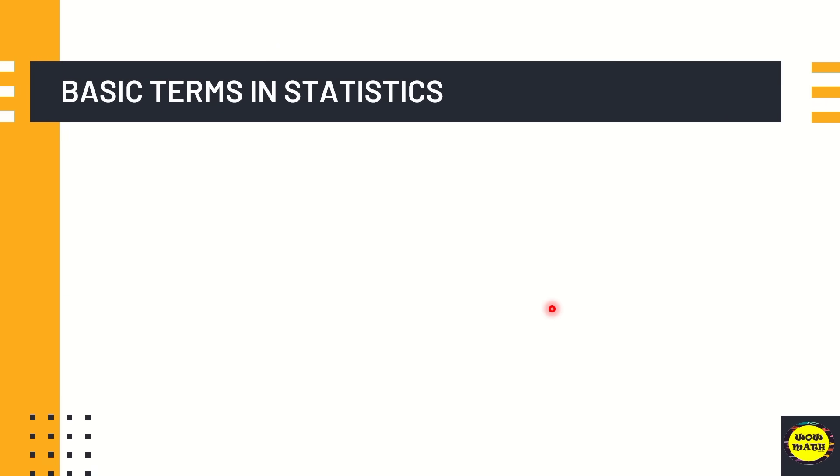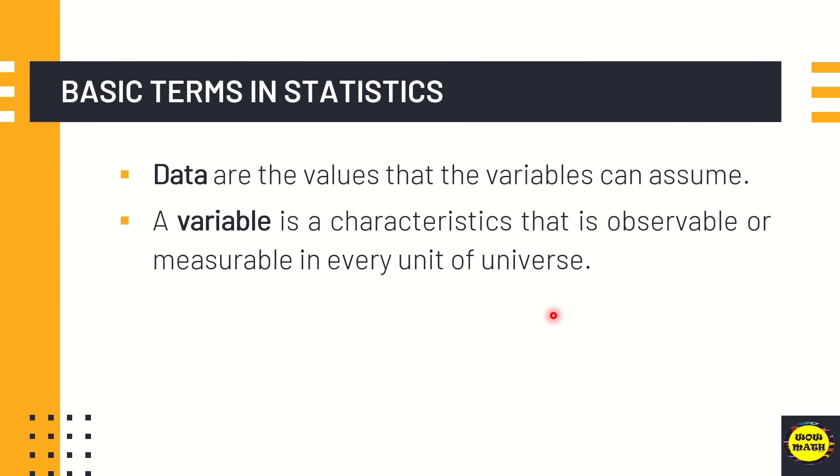What are those basic terms in statistics? First, we have the data. Data are the values that the variables can assume. A variable is a characteristic that is observable or measurable in every unit of universe or population.